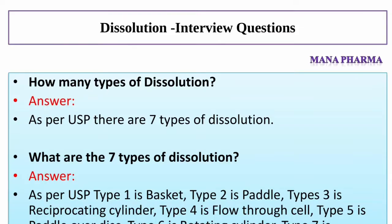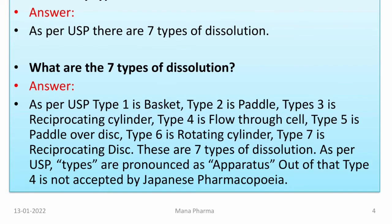How many types of Dissolution are there? Answer: As per USP, there are 7 types of Dissolution. Type 1 is basket, type 2 is paddle, type 3 is reciprocating cylinder, type 4 is flow through cell, type 5 is paddle or disc, type 6 is rotating cylinder, and type 7 is reciprocating disc.